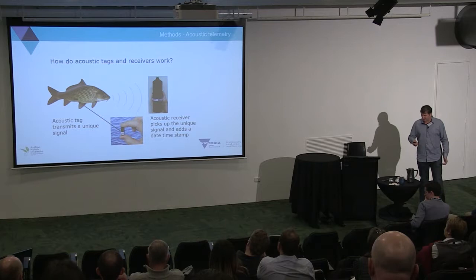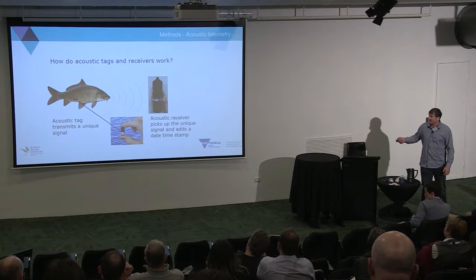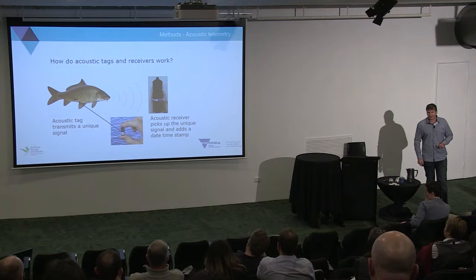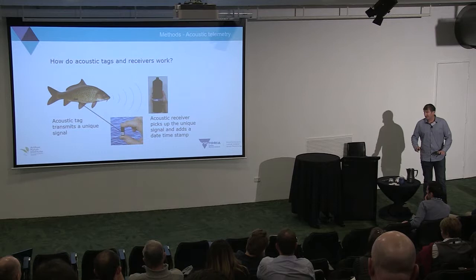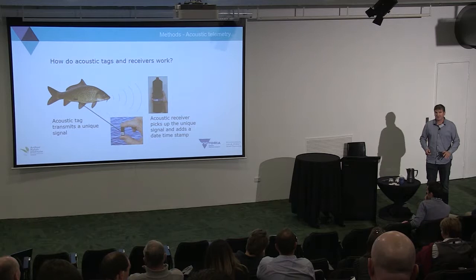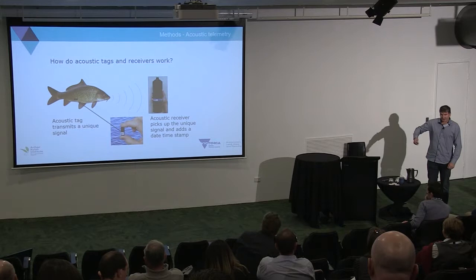So how do we do it? We used acoustic receivers. We implant a tag into the fish — that tag transmits a unique signal picked up by an acoustic receiver underwater. The receiver detects the signal from the tag and adds a date and time stamp, so we know to the second when it swam past that receiver. In this sort of system in the Murray you'd expect a 300 to 400 metre range, though some receivers in the forest will have reduced range due to vegetation density.